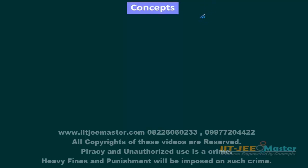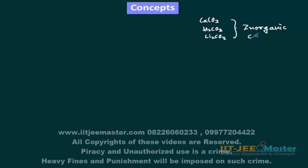In organic chemistry, we study about the compounds of carbon which are not inorganic. Compounds such as CaCO3, H2CO3 are inorganic compounds of carbon, so we don't study them in organic chemistry. The compounds we study in organic chemistry are somewhat like CH4 (methane), ethane, methyl alcohol, and similar compounds that normally contain hydrogen.